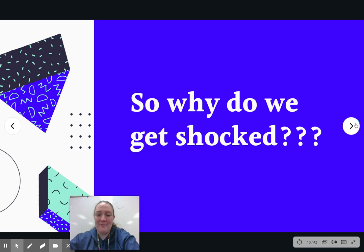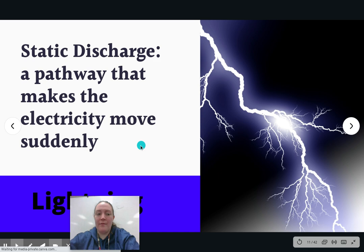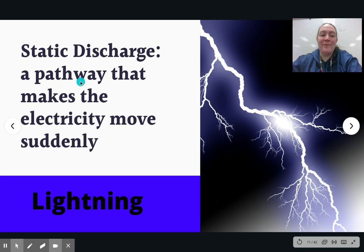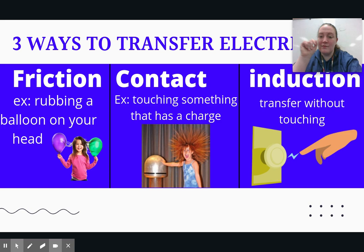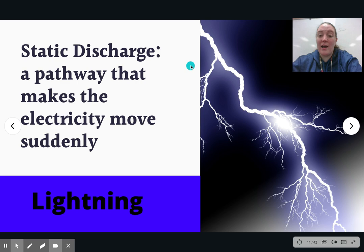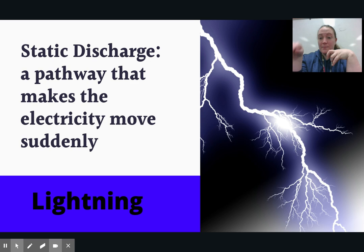So why does that happen? Why do we get shocked? It's because of static discharge. Static discharge is a pathway that makes electricity move suddenly. When you get close enough to an object, it's going to want to take that negative charge and get rid of it. That's your static discharge. It's the same way lightning happens — there's a buildup of positive and negative energy up in the clouds and then it discharges down to the ground.